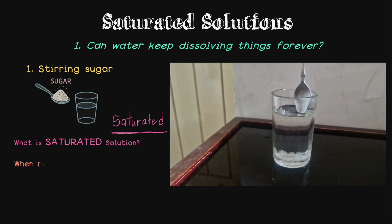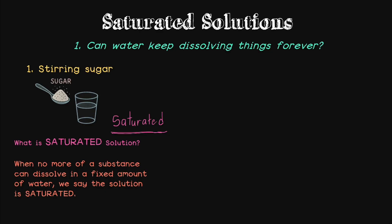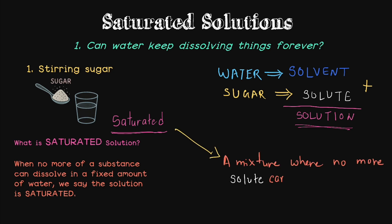So if we need to define it, you can say that when no more of a substance can dissolve in a fixed amount of water, we say that the solution is saturated. Here water acts as the solvent, sugar acts as the solute, and solvent and solute together create the solution. So from these terms, we can define saturated solution as a mixture where no more solute — in our example, sugar molecules — can dissolve in the solvent, which is water.